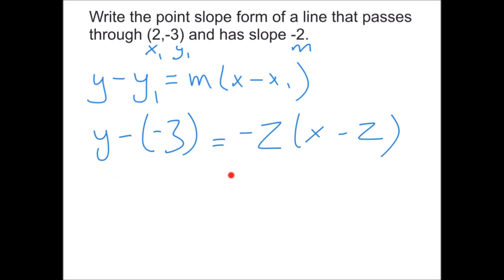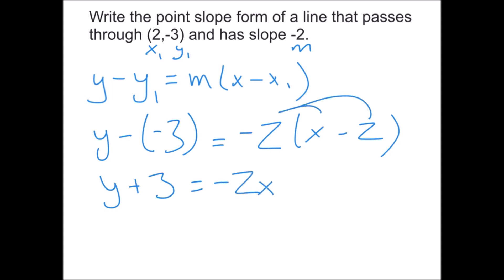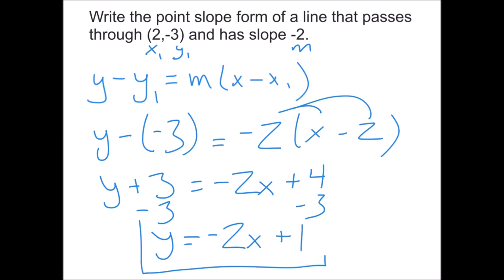If you want to make this more useful, you can solve it for y to get back to y equals mx plus b. First, y minus a negative 3 becomes y plus 3. Then distribute the negative 2: negative 2x plus 4. Subtract 3 from both sides to get y equals negative 2x plus 1. This step wasn't required since they asked for point-slope form, but this is how you convert point-slope form back to slope-intercept form.